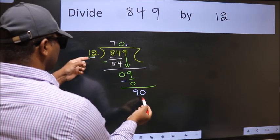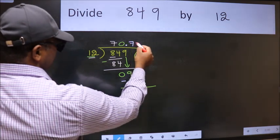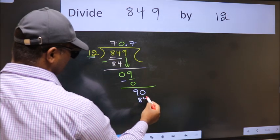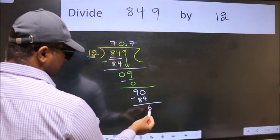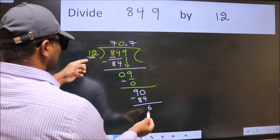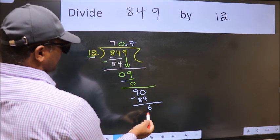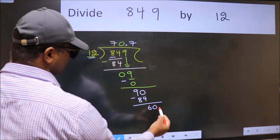A number close to 90 in 12 table is 12 sevenths, 84. Now we subtract. We get 6. 6 smaller than 12. We already have the decimal. So directly take 0.